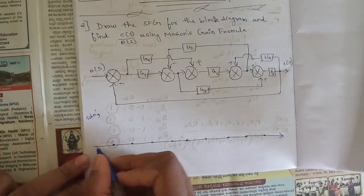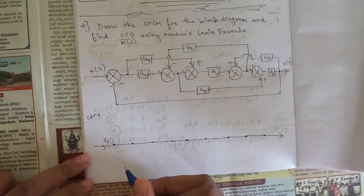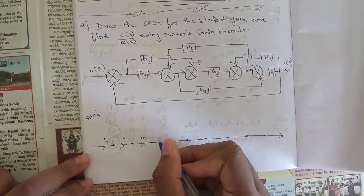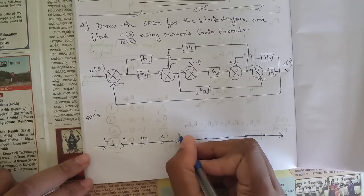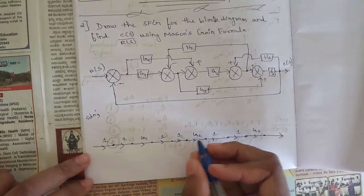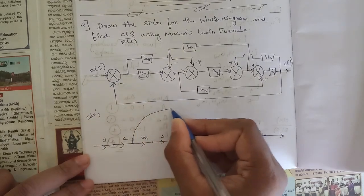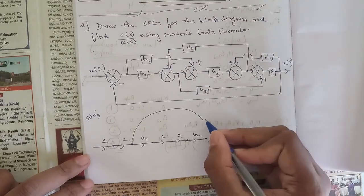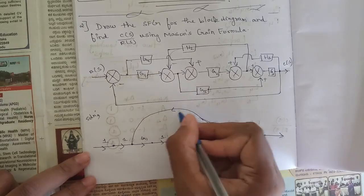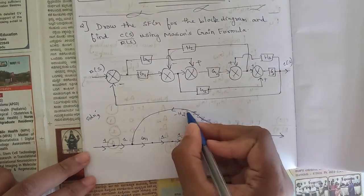By counting all the summing points and takeoff points, we write all the branch gain values. The first branch is 1, and the next is also 1. Then we have G1, followed by 1, 1, 1, G2, 1, 1, and G3. From this point to this point we have one path, which is the H2 path, so this is minus H2.